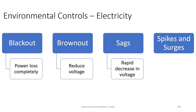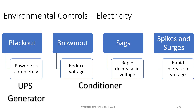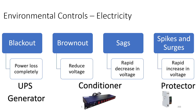The fourth and last type of electricity-related threat is spikes or surges — a rapid increase in voltage. If you get a high increase in voltage level without protection, this could cause your device to instantly become corrupted because it received too much power. UPS and generator can be used for blackouts, a conditioner for lower voltage, and a surge protector in case of a spike or surge.